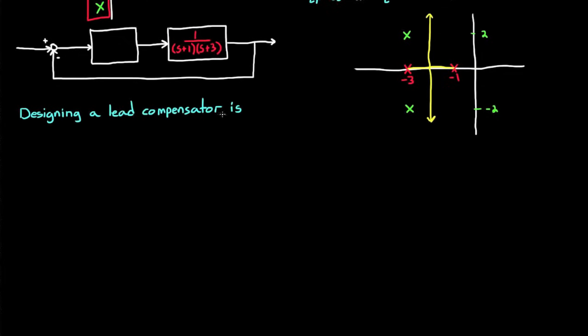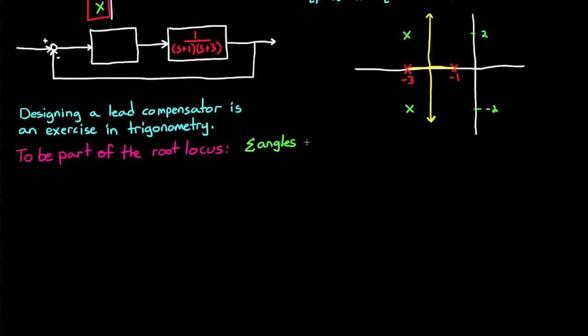So now at this point, designing a lead compensator is really just an exercise in trigonometry, just solving for the angles of a few triangles. Let me show you why. In order for a point to exist on the root locus, then the sum of the angles of all the poles minus the sum of the angles of all of the zeros has to equal 180 degrees. And the angle I'm talking about is the angle of the line from the open loop pole to the closed loop pole on the root locus.